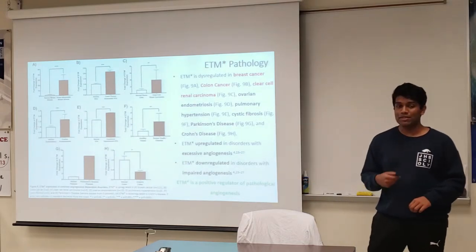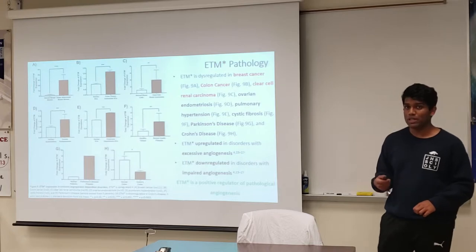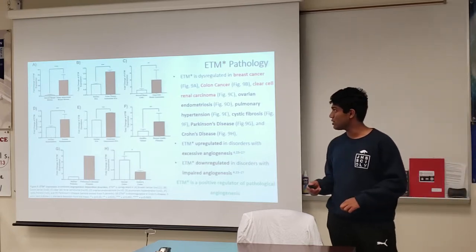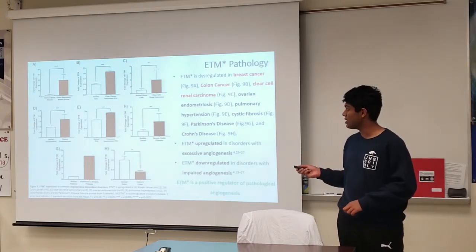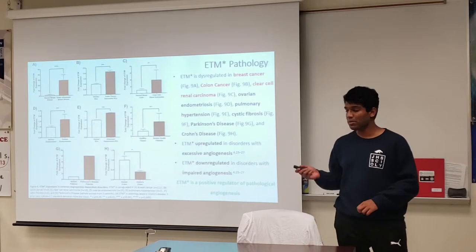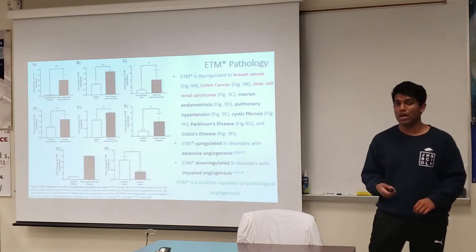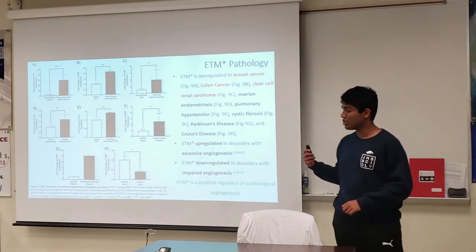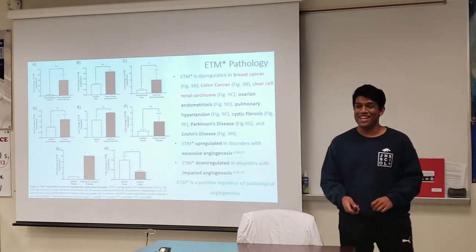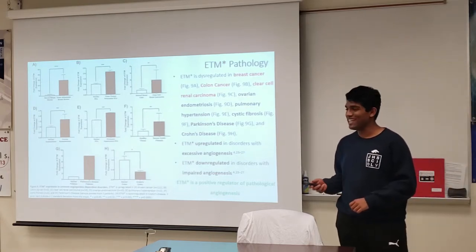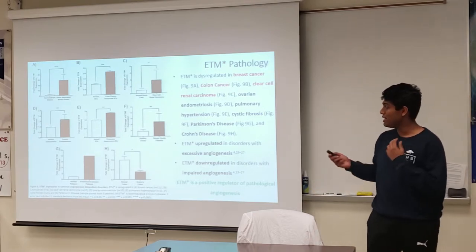I then analyzed previously published microarray datasets to identify abnormal ETM expression in known angiogenesis-dependent disorders. In disorders associated with excessive angiogenesis such as cancers, ovarian endometriosis, pulmonary hypertension, cystic fibrosis, and Parkinson's disease, ETM was grossly upregulated versus in disorders associated with impaired angiogenesis such as Crohn's disease, where ETM is grossly downregulated. This suggests that ETM is a positive regulator of pathological angiogenesis.